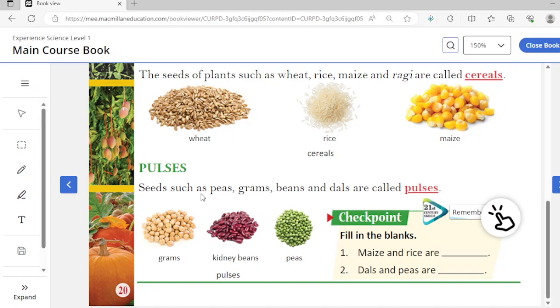Next is pulses. Seeds such as peas, grams, beans and dals are called pulses. So you see here gram, kidney beans which we call rajma, and peas. Now fill in the blanks: maize and rice are cereals, dals and peas are pulses, right?